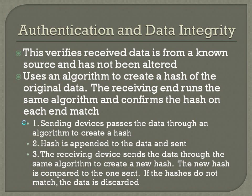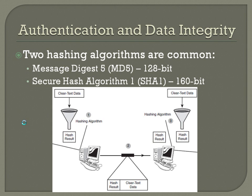Two common hashing algorithms are Message Digest 5 or MD5, which is 128-bit, and Secure Hash Algorithm 1 or SHA-1, which is 160-bit. There's a diagram here — you throw the clear text data in, it produces a hash result. That hash is added to the front of the packet. The data will actually be encrypted, but the hash result is at the front. The receiving device cuts that off, runs the data through the same algorithm, and compares the two results. If they match, the packet is good; if not, it's discarded.